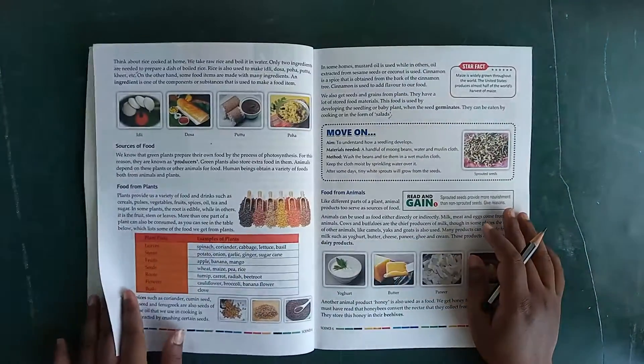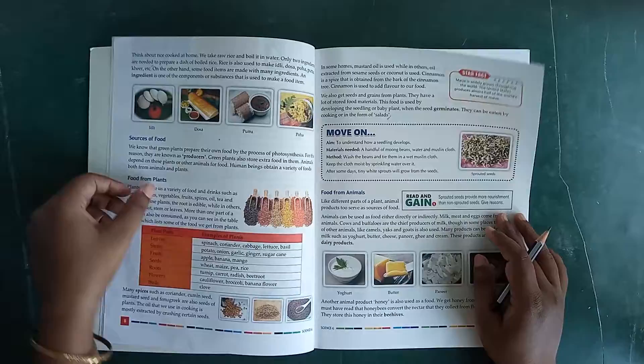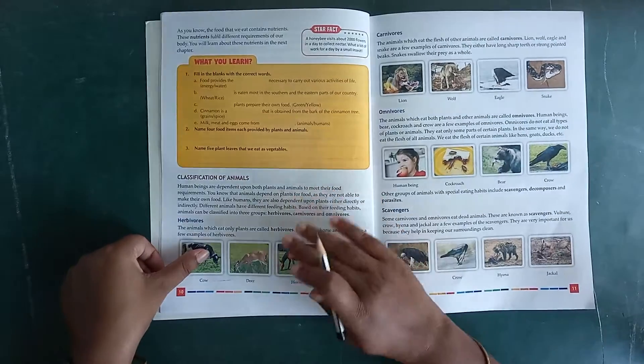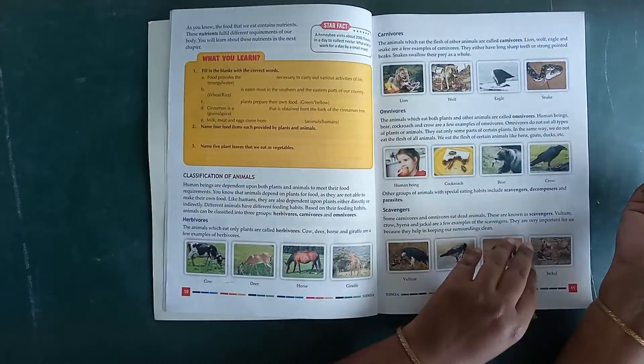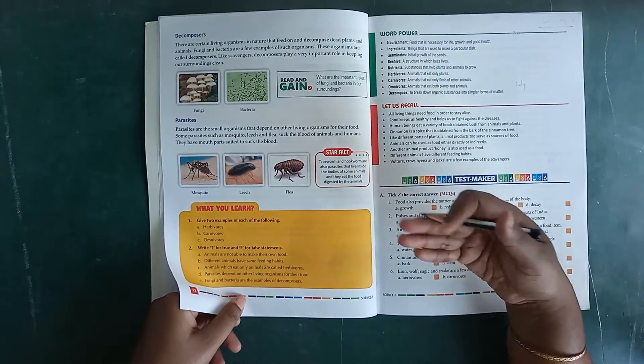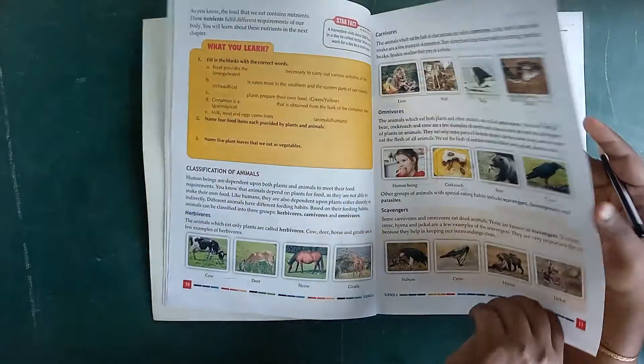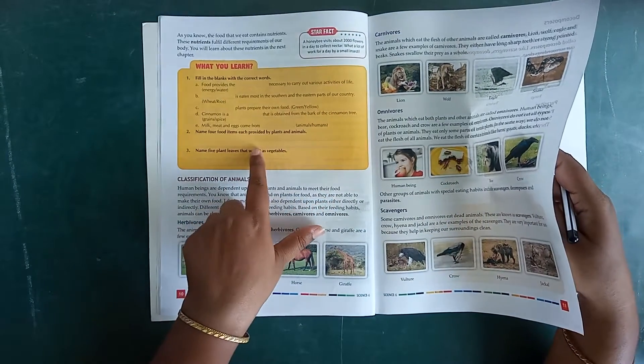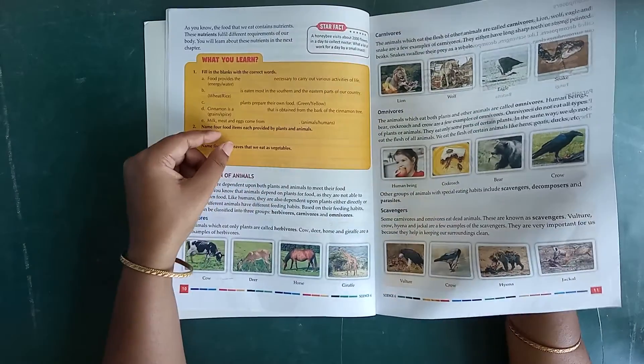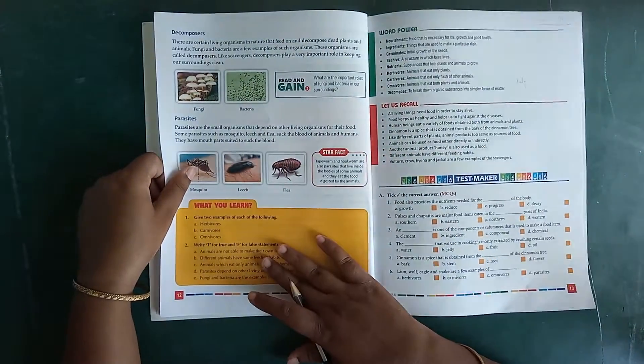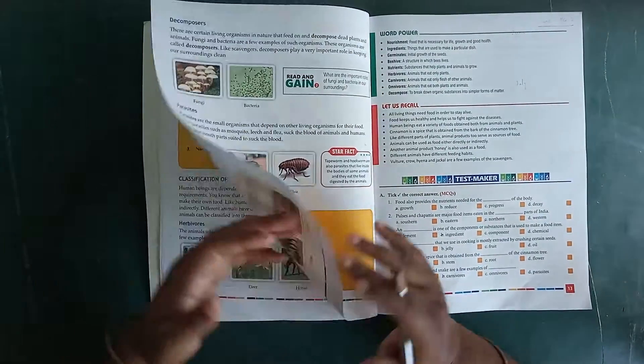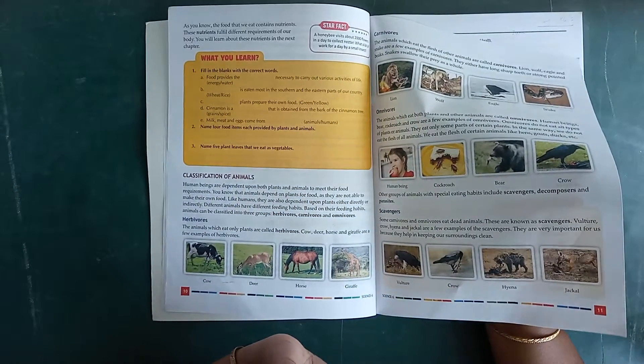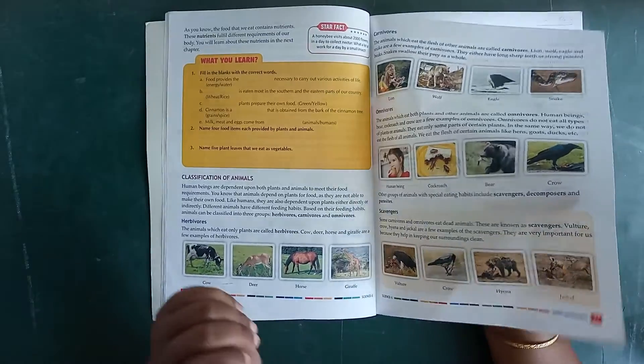The topic is the importance of food, then sources of food, food from plants, food from animals, then classification of animals: herbivores, carnivores, scavengers, and then decomposers and parasites. In the middle of the chapter, there were two exercises - fill in the blanks, then you had two question answers and then exam course and true and false. These two exercises you have to search from your book and do it by your own. I have told you in the previous video also.